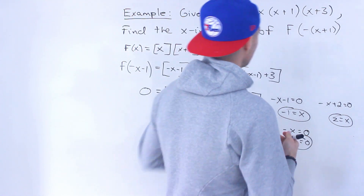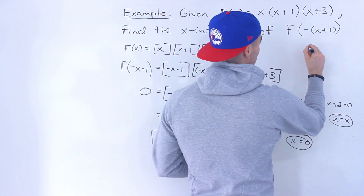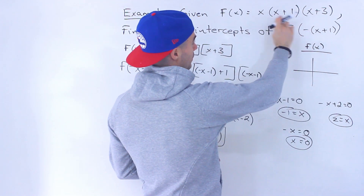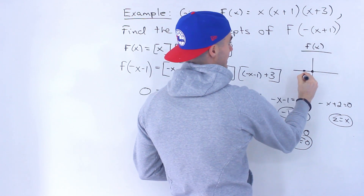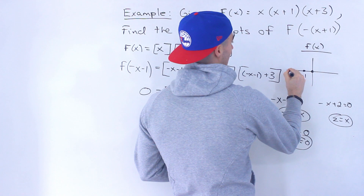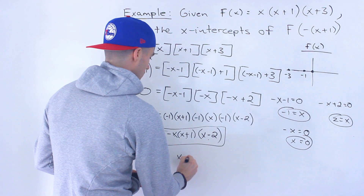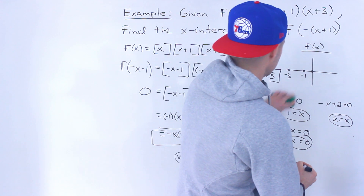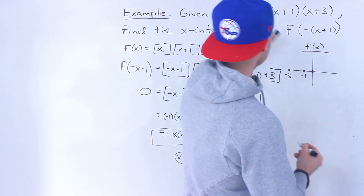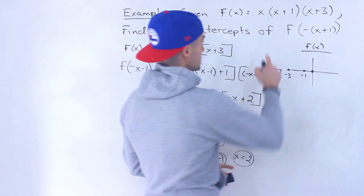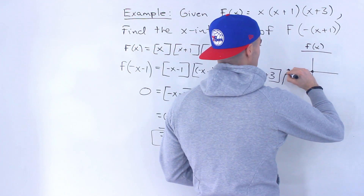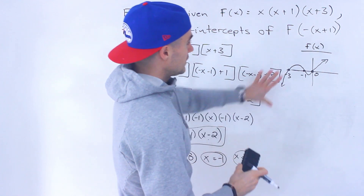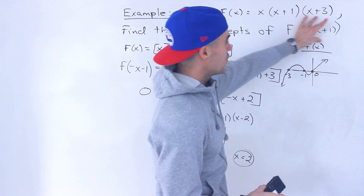Another pretty neat way is to take the original function and graph it. This polynomial has x-intercepts of 0, negative 1, and negative 3. Since it has a positive leading coefficient, it starts in the third quadrant and curves up through those intercepts. Now we consider what transformations f of negative bracket x plus 1 represents.